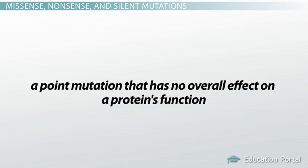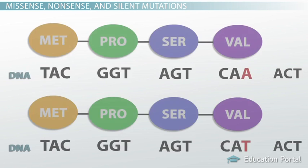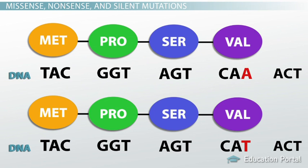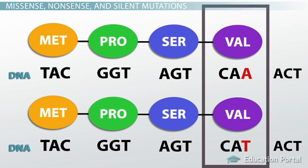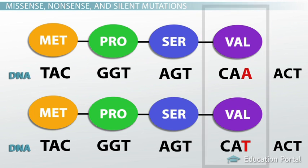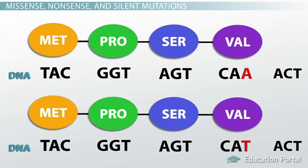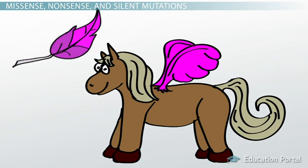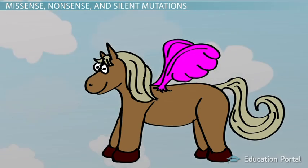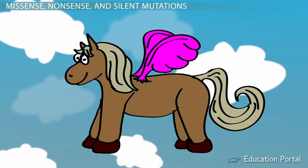A point mutation that has no overall effect on a protein's function is called a silent mutation. Sometimes a silent mutation results in the same exact sequence of amino acids, as happened here. Other times in a silent mutation there's an amino acid change, but it doesn't affect the overall function of the protein. In the case of our pony, the magic keratin wouldn't be changed at all — he would still have plain pink wings and still be able to fly.